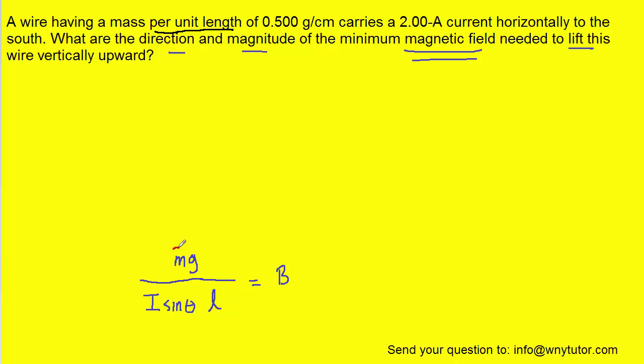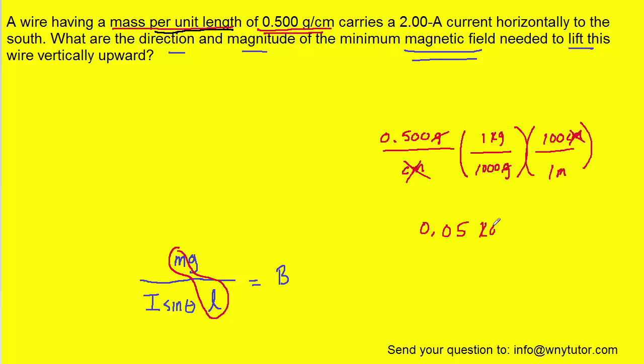Notice in this equation, we have a term mass divided by length. That is exactly what was given in the question. We just have to convert it into a standard unit. Converting the mass, we know that one kilogram equals a thousand grams, and for the length, 100 centimeters is present in one meter. That will be 0.05 kilograms per meter.